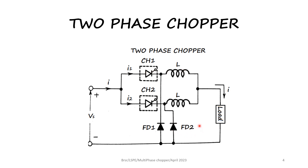FT2 is the freewheeling diode connected in the second chopper circuit. Multi-phase choppers are used when a large load current is required. By connecting two choppers in parallel, the current is doubled — I1 plus I2 is the current in the circuit. The inductance L is assumed to be sufficiently large so that each chopper operates independent of the other. Multi-phase choppers contain two or more choppers connected in parallel.